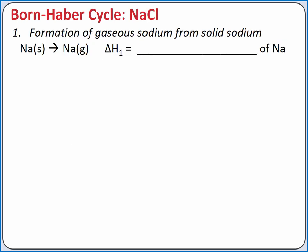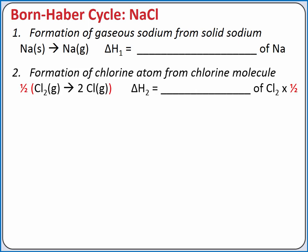In our first step, we'll change the solid sodium metal into gaseous sodium atoms. The enthalpy change for this process is the enthalpy of sublimation of sodium, since sublimation is changing directly from a solid to a gas. In our second step, we'll break the chlorine-chlorine single bond in Cl₂ to produce two chlorine gas atoms. The energy required to break the bond is called the bond energy. Since we only need one-half of the chlorine molecule from our enthalpy of formation equation, we multiply this equation times one-half.